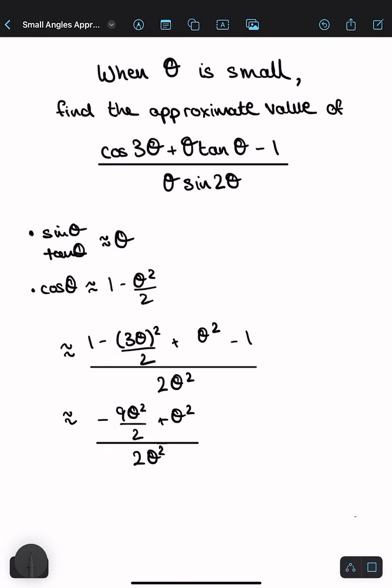Now let's just sort out this fraction on top. So if we change the denominators to 2, that's minus 9θ² over 2 plus 2θ² over 2, all divided by 2θ².